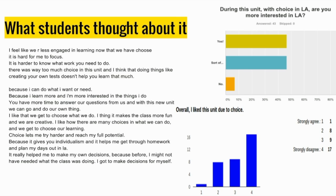Some of the data coming from the students looks at what they thought about this — how did it affect their interest in language arts, and how did they like the unit due to the choice? As you can see with the graph, the stats are represented. In some regards for some students there was too much choice, but for others 'the choice lets me try harder and reach my full potential.' There's a fine balance that Victoria was really striving for where there was enough structure balancing out with the choice. Students are recognizing that they learn more when they're interested, and overall even for students where choice was overwhelming, it still had a positive outcome for many.